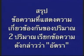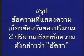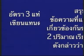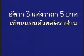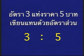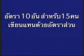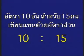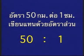เหล่านี้เป็นข้อความที่แสดงความเกี่ยวข้องกันของปริมาณ 2 ปริมาณ เรียกข้อความดังกล่าวว่าอัตรา ซึ่งเราสามารถเขียนอัตราส่วนแทนอัตราได้ ดังตัวอย่างต่อไปนี้ครับ อัตรา 3 แท่งราคา 5 บาท เขียนแทนด้วยอัตราส่วนเป็น 3 ต่อ 5 อัตรา 10 อันสำหรับ 15 คน เขียนแทนด้วยอัตราส่วนเป็น 10 ต่อ 15 อัตรา 50 กิโลเมตรต่อชั่วโมง เขียนแทนด้วยอัตราส่วนเป็น 50 ต่อ 1